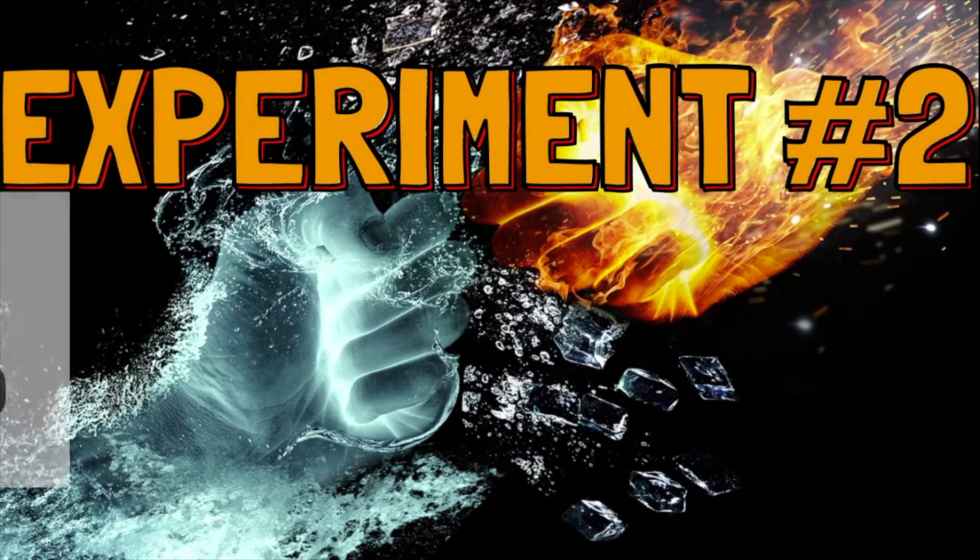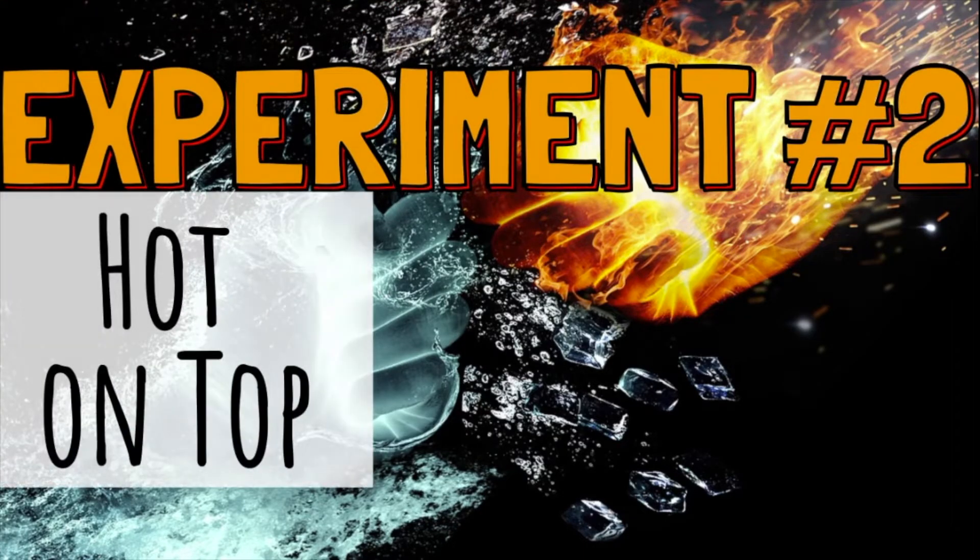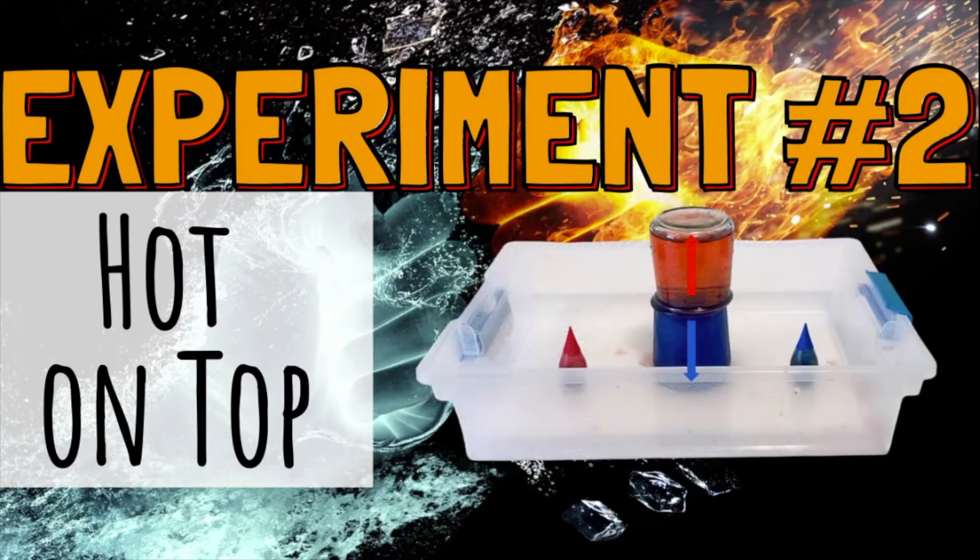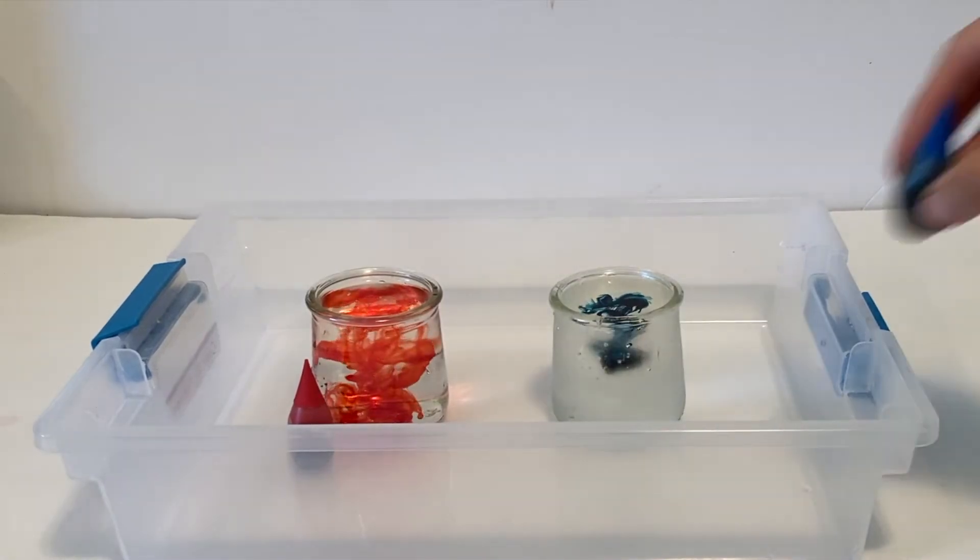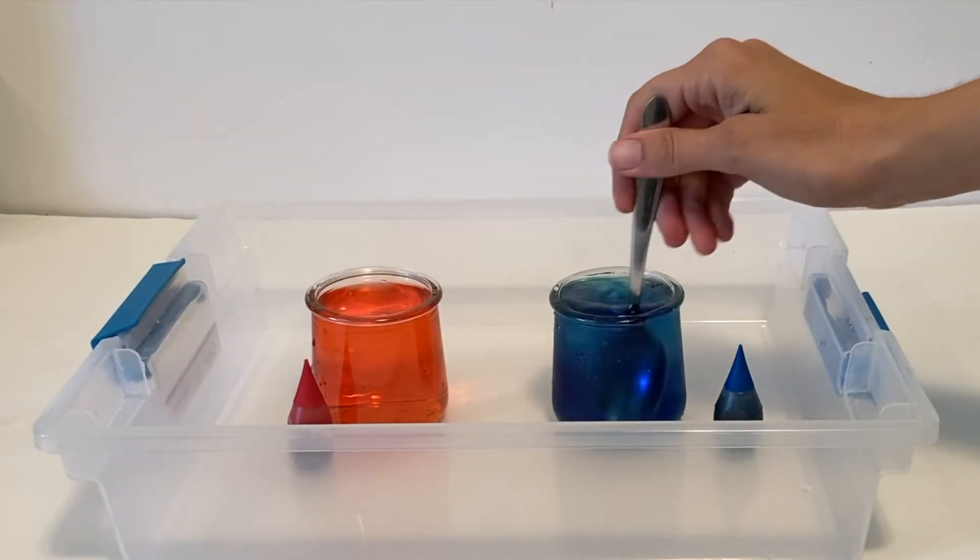In the second experiment, we'll place the jar of hot water on top of the jar of cold water. Once again, make a jar of hot water with some red food coloring in it and a jar of cold water with some blue food coloring.